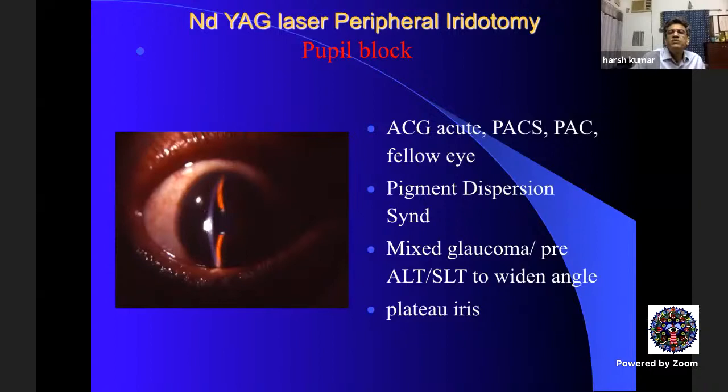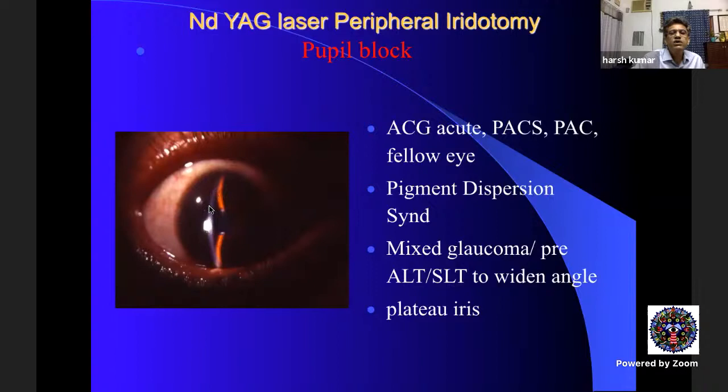ND:YAG iridotomy is done to relieve a pupillary block. Whenever the pupil is blocked, the iris bows forward because aqueous is trapped behind it. We make a hole to release that aqueous and deepen the anterior chamber. Classically it is indicated in acute angle closure, primary angle closure suspect, and primary angle closure.